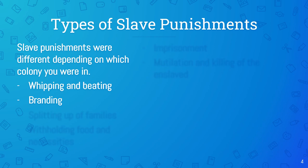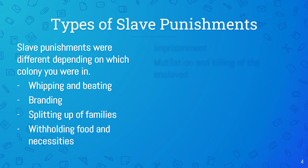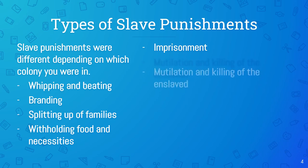You put a hot iron on the skin and it leaves a mark — like what they do to cows. They would also split up families, which is a punishment because being separated from your family causes various personal issues. Then they would withhold food and necessities. There was also imprisonment — being taken away from those you love. And finally, mutilation and killing of the enslaved, where they would destroy parts of your body and sometimes kill you.